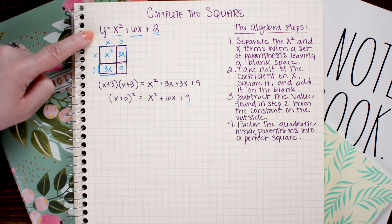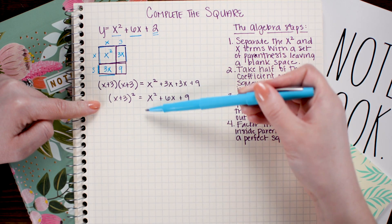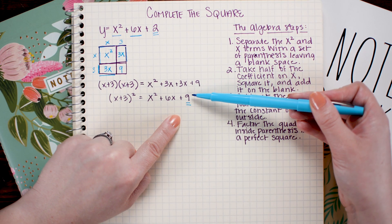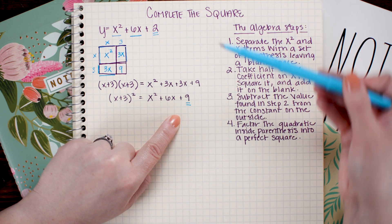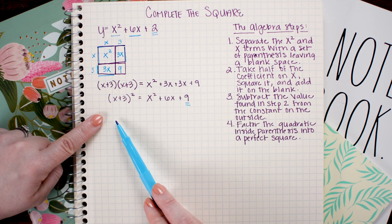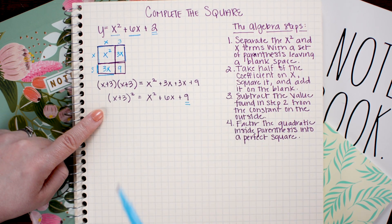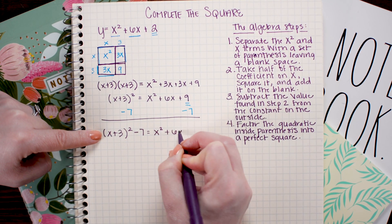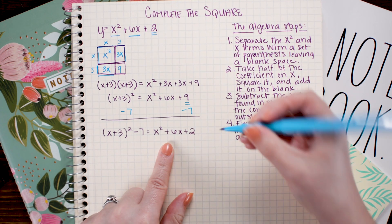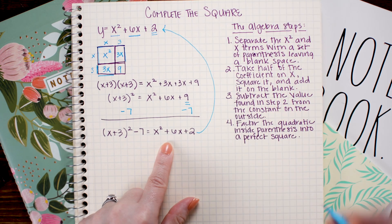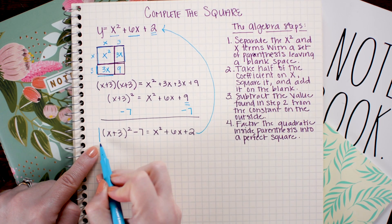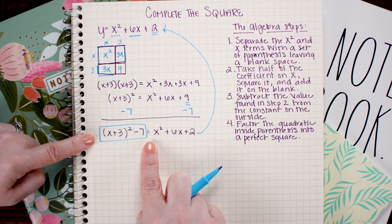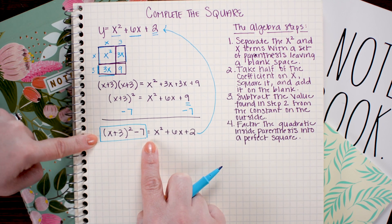To adjust this equation so the right-hand side matches our original, I need to subtract 7, since 9 minus 7 gives 2. Whatever I do to one side, I have to do to the other side. So I subtract 7 from both sides. Now that the right-hand side matches our original equation, the left-hand side is an equivalent form — the equation with the square completed, written in standard form.